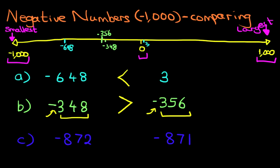Sorry, with the minus. So the smaller number is this one. We've got 872, 871. But because they're minus, the number on the left, 872, is smaller.